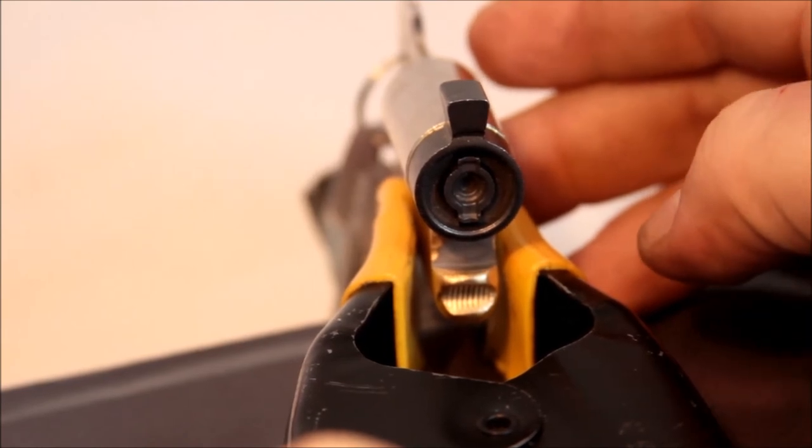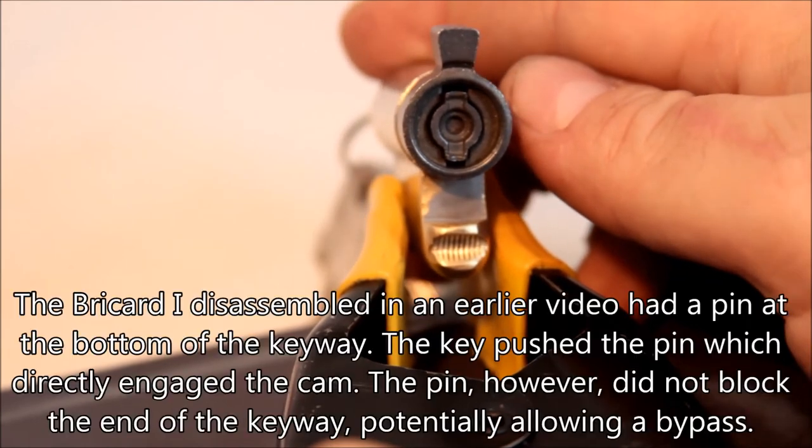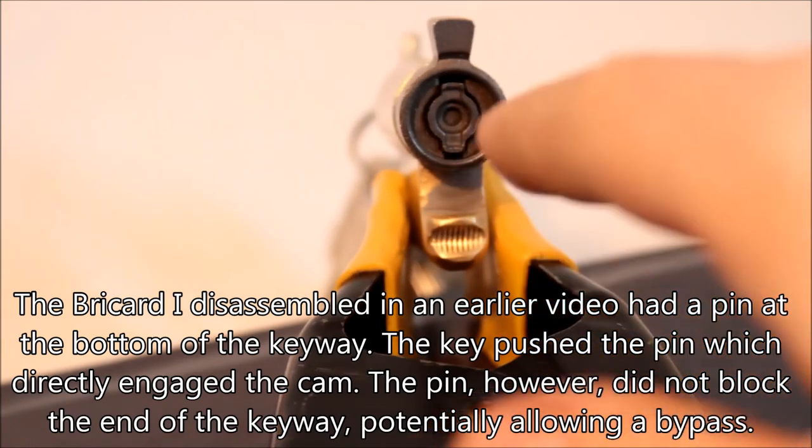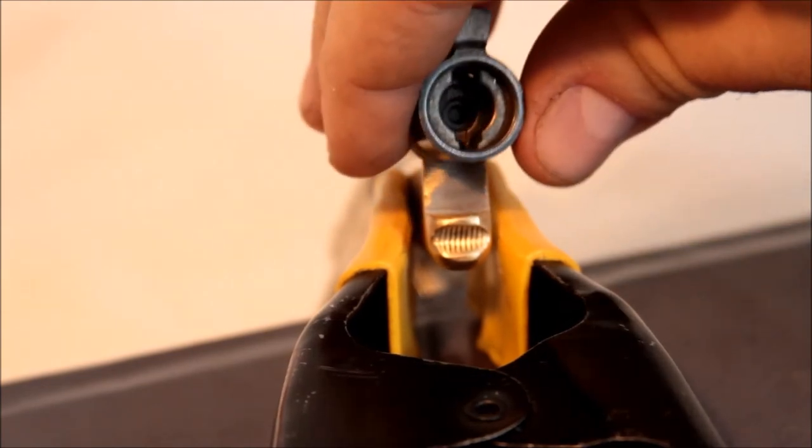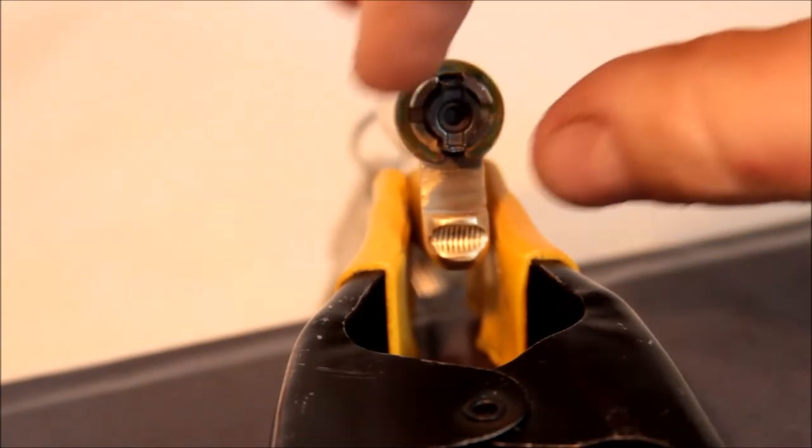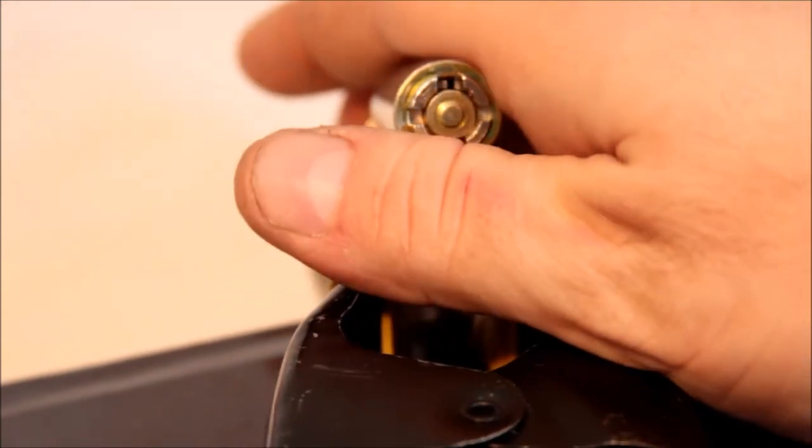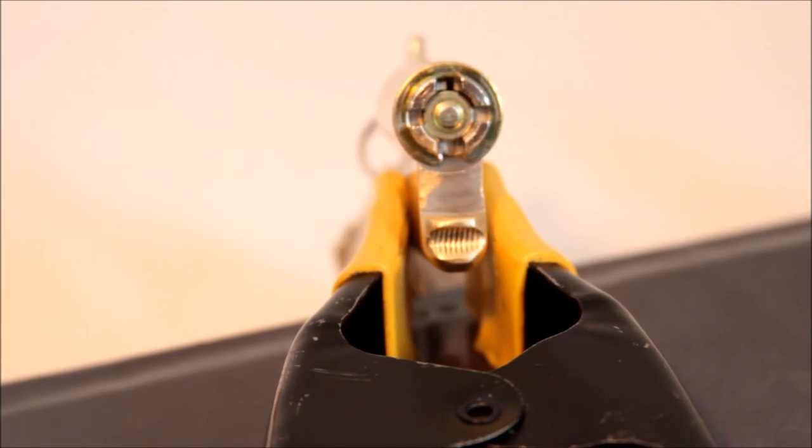Okay, so that's how these things work. I've taken apart a couple of these, they have, I've seen different implementations of this. Sometimes the key actually will hook into here. It depends on the length and how nicely it's designed. In this particular case, it's resistant to that bypass technique that Bosnian Bill showed a week or two ago due to this little plug that's in here. So I thought that was pretty cool.